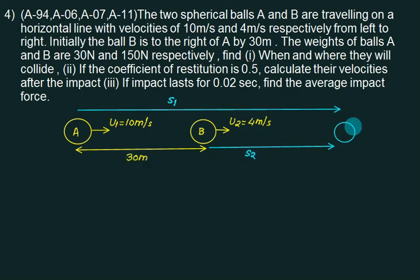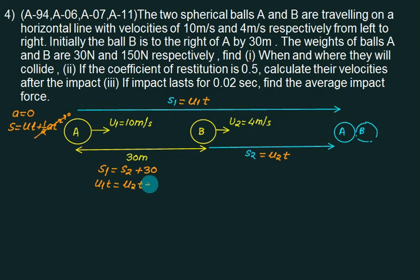If they want to collide, then according to this figure, S1 equals S2 plus 30. If that is true, collision is possible. We assume acceleration equals 0. If acceleration equals 0, then S equals U*t plus half a*t squared. But the second term is 0. So S equals U*t. So this term equals U1 multiplied by t, and this equals U2 multiplied by t. S1 must equal S2 plus 30. But what is S1? S1 is U1*t. S2 is U2*t plus 30.